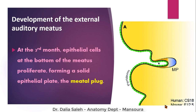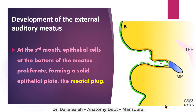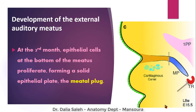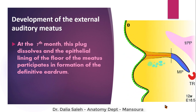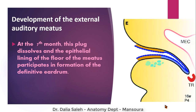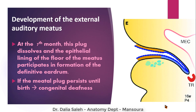For the development of the external auditory meatus, it develops from the dorsal aspect of the first pharyngeal cleft. At the third month of development, epithelial cells at the bottom of the meatus proliferate and multiply to form a solid epithelial plate called the meatal plug or meatal block. This block grows deeper towards a structure called the tympanic ring. At the seventh month of pregnancy, this plug begins to dissolve, and the epithelial lining of the floor of the meatus participates in forming the outer ectodermal layer of the definitive eardrum. Congenital deafness develops if the meatal block does not dissolve and persists until birth.